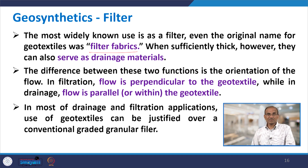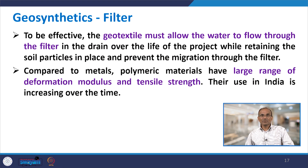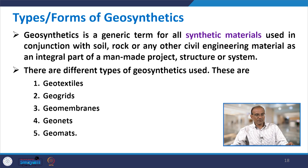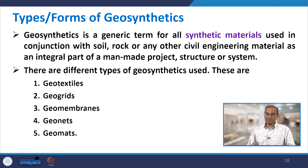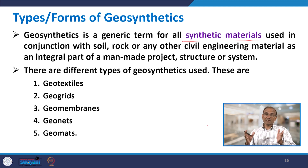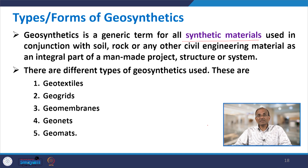Compared to metals, polymeric materials have a large range of deformation modulus and tensile strength, and their use in India is increasing over time. Geosynthetics is a generic term for all synthetic materials used in conjunction with soil, rock, or any other civil engineering material as an integral part of a manmade project, structure, or system. The main types include geotextiles, geogrids, geomembranes, geonets, and geomats, with the suffix describing their appearance or form.